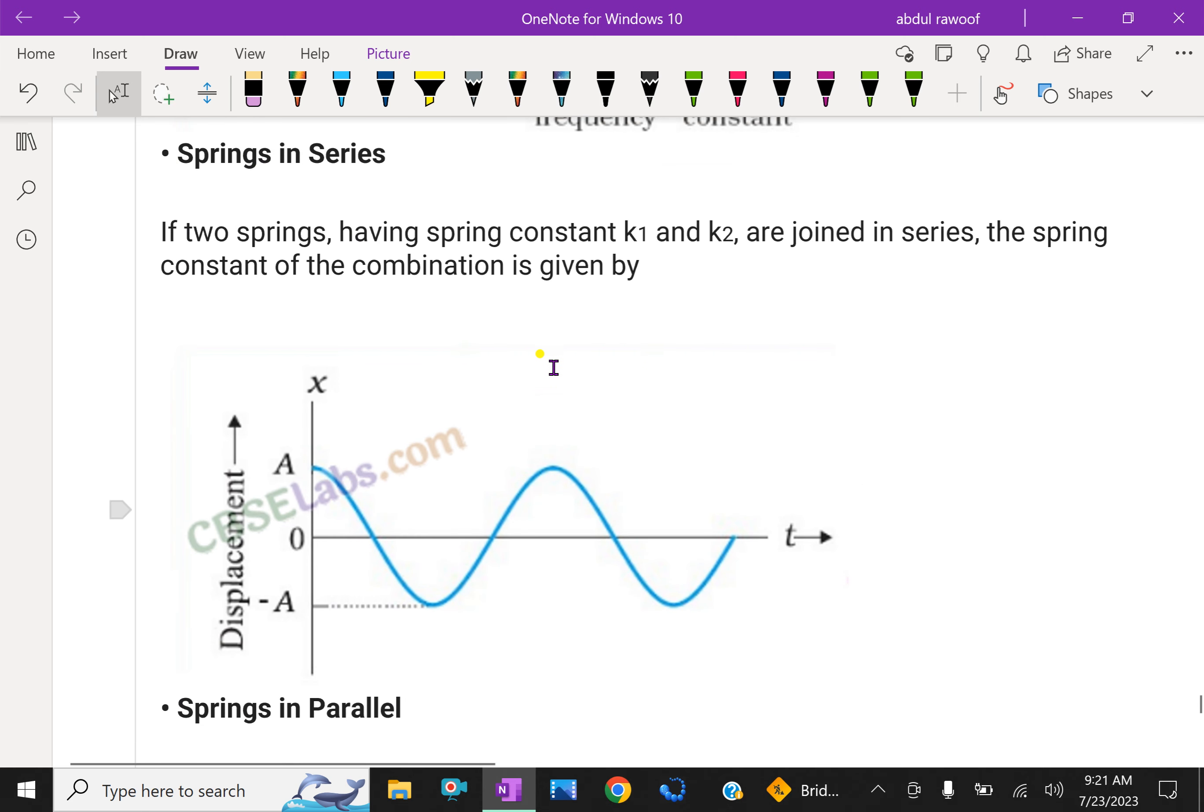Springs in series: If two springs having spring constant k1 and k2 are joined in series, the spring constant of the combination is given by 1/k = 1/k1 + 1/k2.